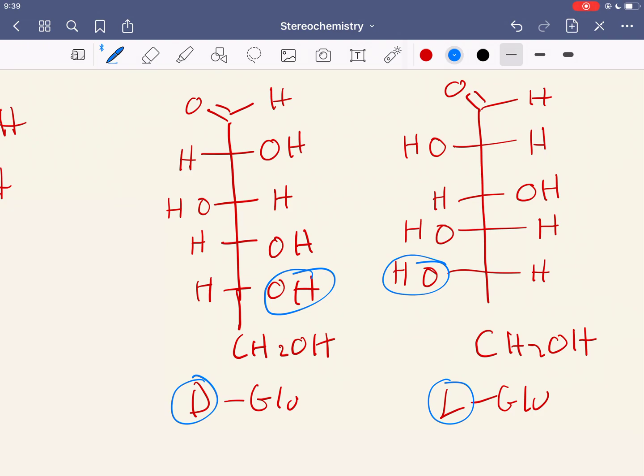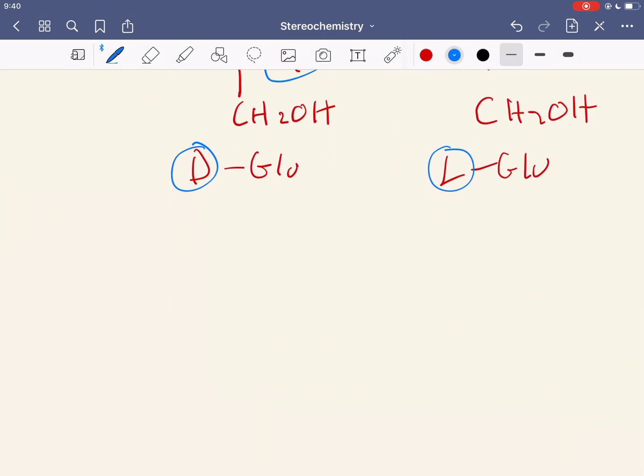So don't get confused about that. When you have a D sugar and they ask you, what's the L form of this sugar? It should be like an easy question, easy marks to get. It's the entire enantiomer, which means that all chiral centers were flipped. And that's pretty much all I had to say about R and S and D and L.